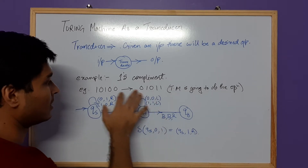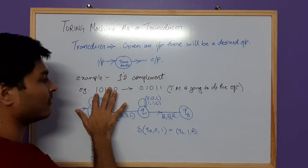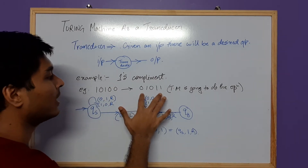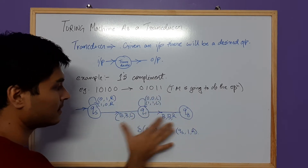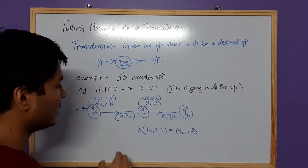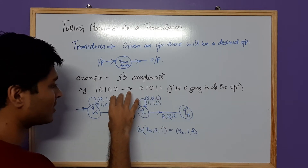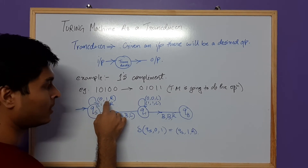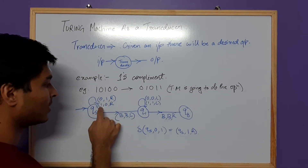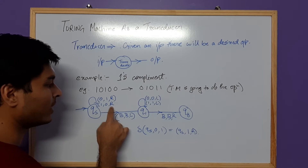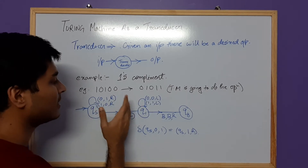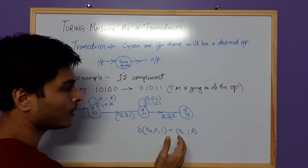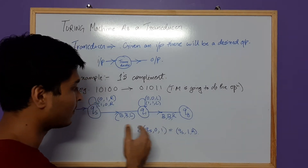The refinement is that the pointer, which starts at the leftmost side of the input, should also end on the leftmost side of the output. For that we need a few extra steps. The main function — converting zeros to ones and ones to zeros while moving right — is already done. The next steps are just about moving the pointer back to the leftmost position of the string.